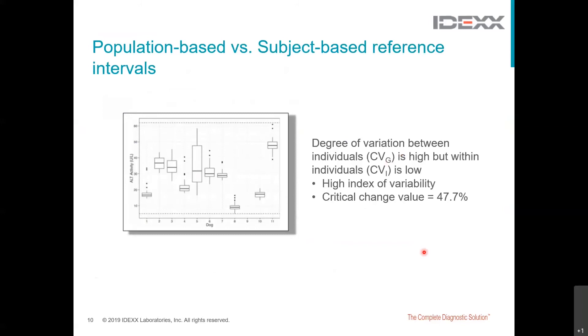When the variation within an individual, so that's CVI, is less than that in the population, so CVG, this means that the population-based intervals may not be the best method of detecting an abnormal test result in that individual. In Ruo's study, this was the case for ALT. The variation within an individual, CVI, was 19.5%, whereas the variation in the population, CVG was 70%. In this scenario, a change in the individual animal's result from an established baseline for that animal may in fact be the best way of picking up a test abnormality that is due to disease. This change, called the reference change value, also known as the critical difference, gives rise to the subject-based reference value. So if the test result changes from baseline more than the reference change value, this supports a true change versus one that is simply just due to chance. And in Ruo's study, in the case of ALT, for example, that critical change value was 47.7%.